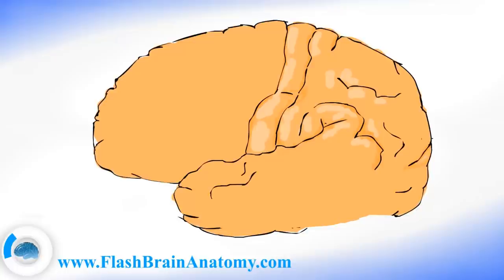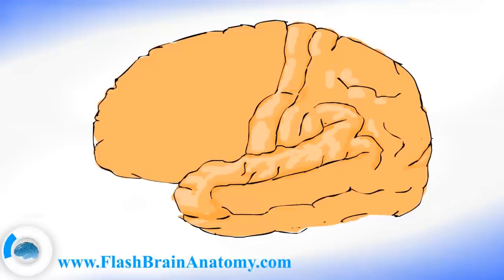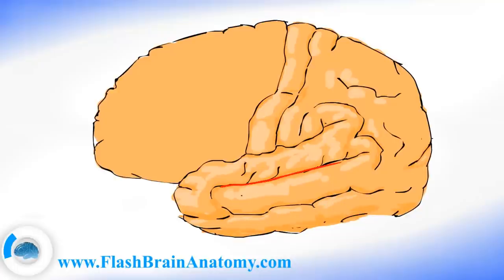Then we have the occipitoparietal sulcus over here. We have the superior temporal sulcus with the superior temporal gyrus — so this is the superior temporal gyrus, and this is the superior temporal sulcus. Then we have the inferior temporal sulcus over here. And the middle temporal gyrus. At last we have the inferior temporal gyrus over here. This was the superior temporal sulcus and this was the inferior temporal sulcus.